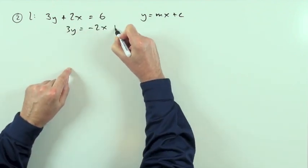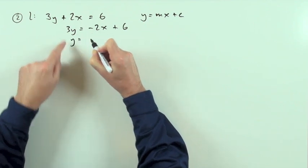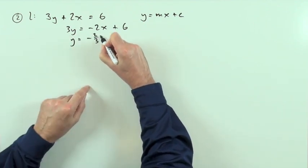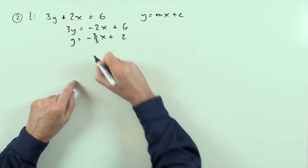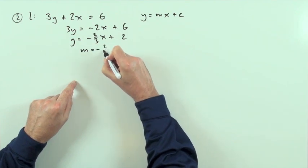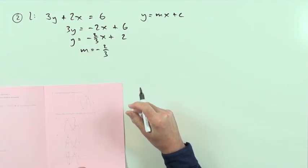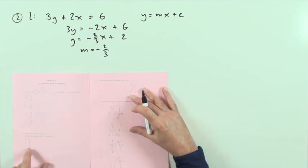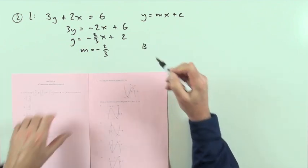So it'd be 3y = -2x + 6, and then divide by the 3, so it's -2/3 x + 2, which doesn't matter. Which means you've got the gradient is -2/3, and any line parallel will have the same gradient. So you're looking for -2/3, which is b.